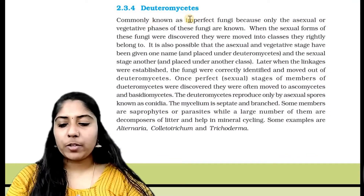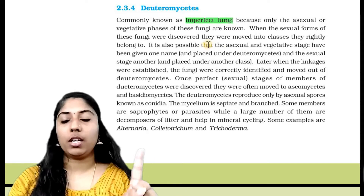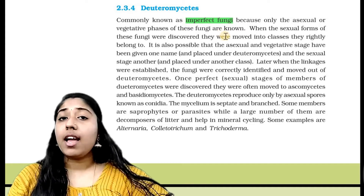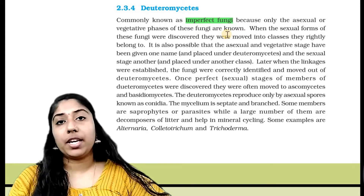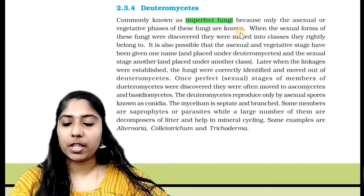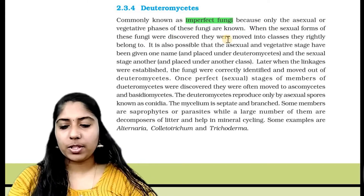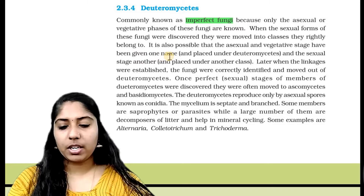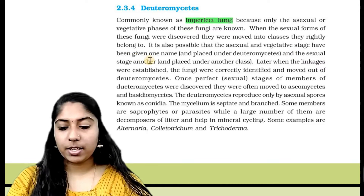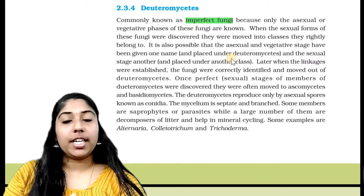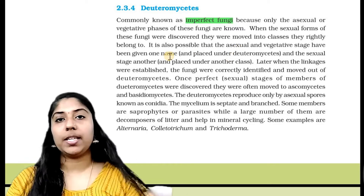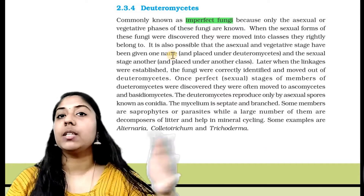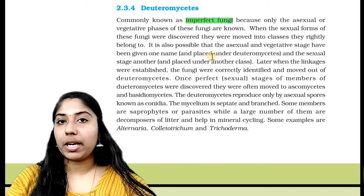Deuteromycetes are commonly known as imperfect fungi. When the sexual forms of these fungi were discovered, they were moved into the classes they rightly belong to. It is also possible that the asexual and vegetative stage were placed under Deuteromycetes, and the sexual stage placed under another class.